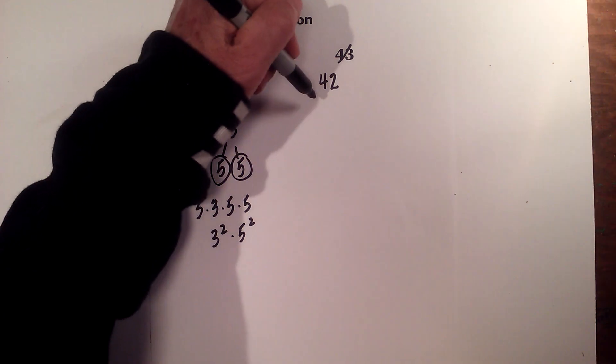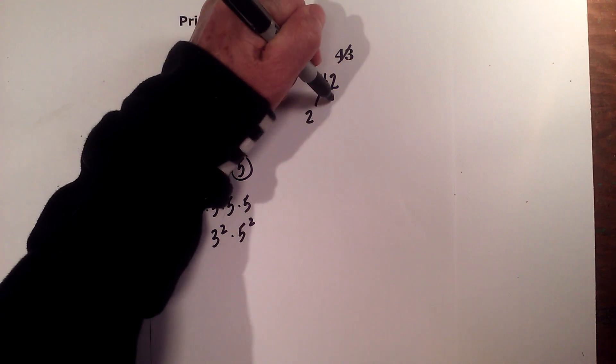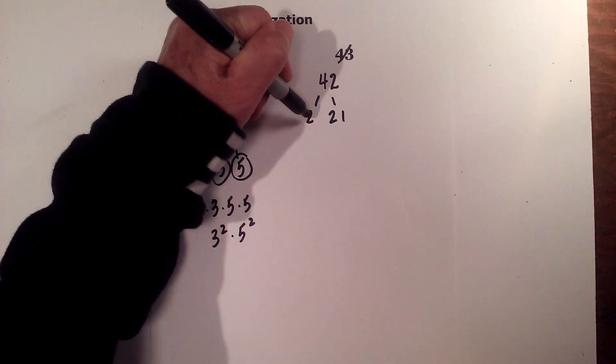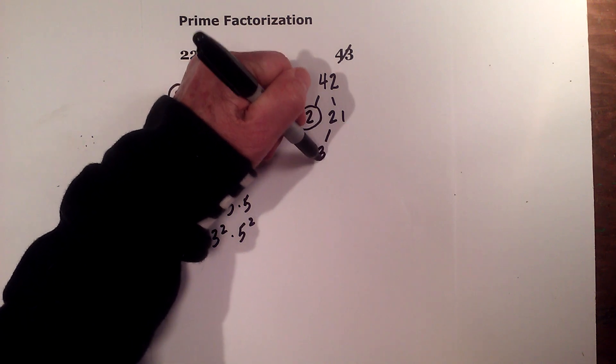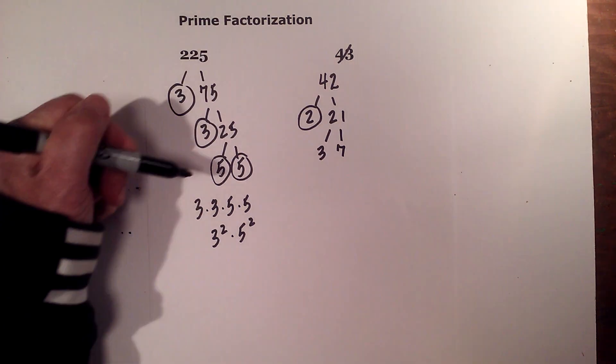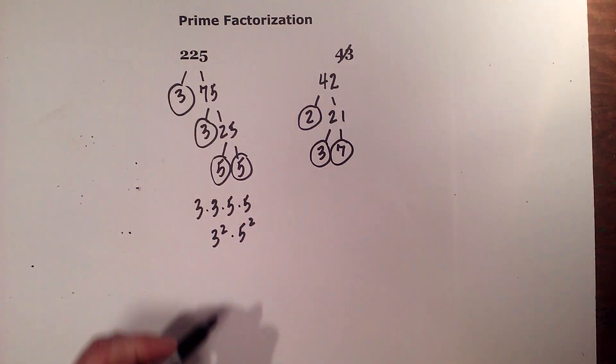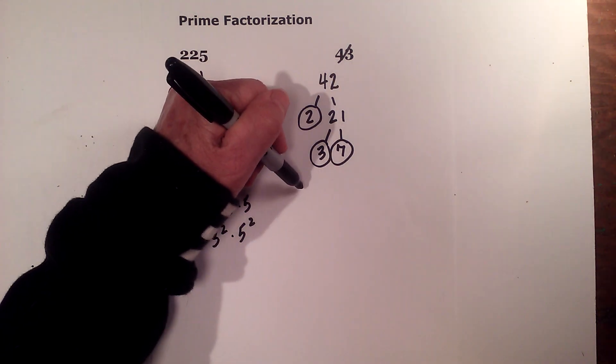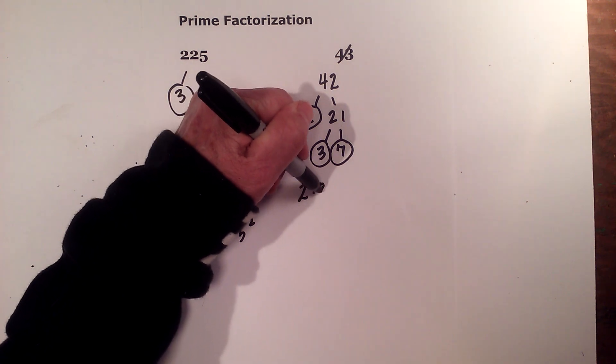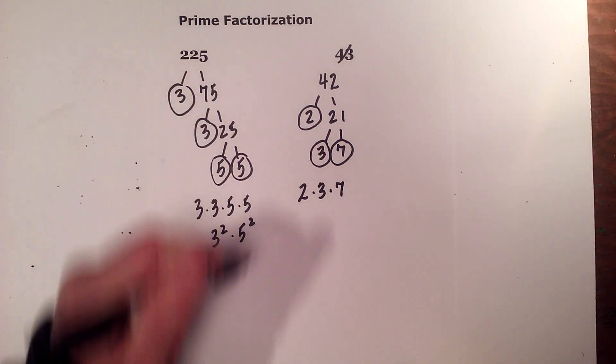Okay, so now I have 2 times 21. Circle the 2 because it is prime. And now 3 times 7 equals 21. Circle both of these because they are prime. So the prime factorization of 42 is 2 times 3 times 7.